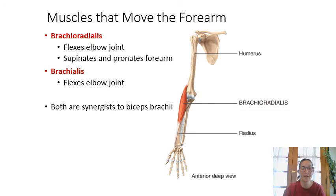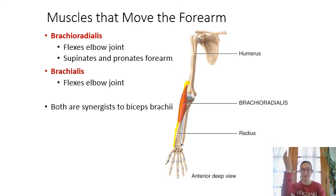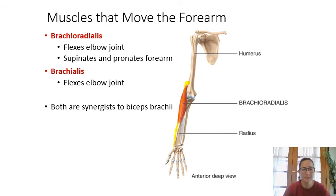Brachioradialis starts on the humerus and runs all the way down to the radial side of the hand. It's somewhat synergistic in elbow flexion but is also really important for supination and pronation of the forearm — rotating the forearm.